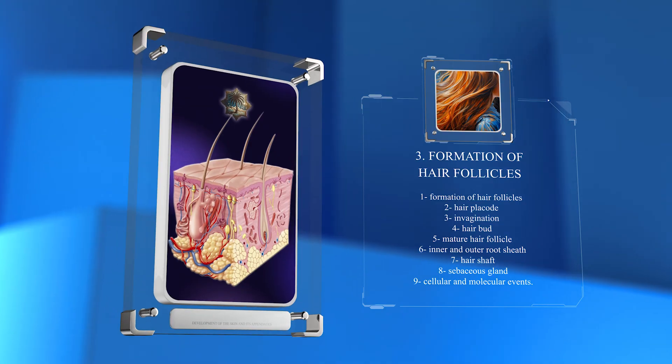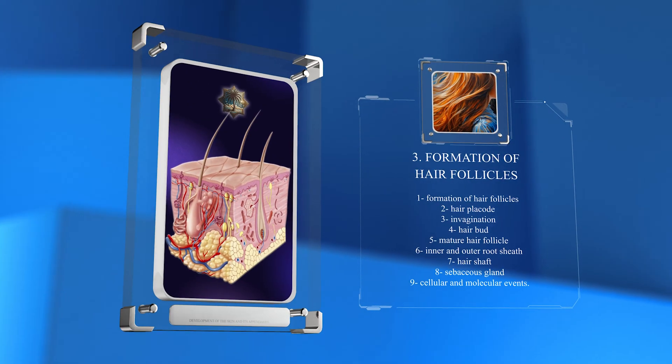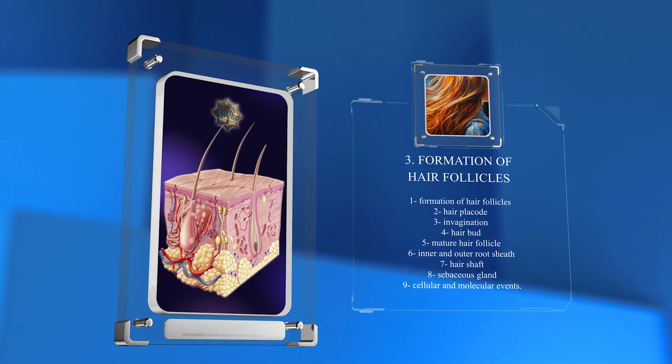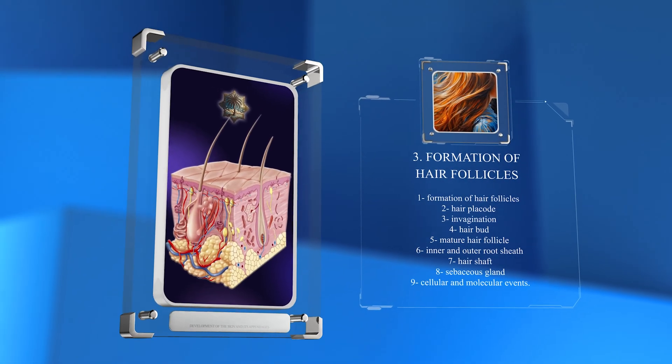These components include the inner and outer root sheath, hair shaft, and sebaceous gland. This process involves intricate cellular and molecular events.